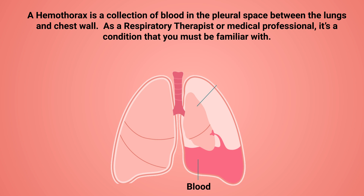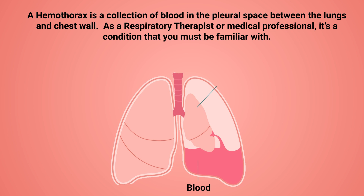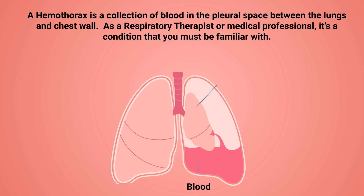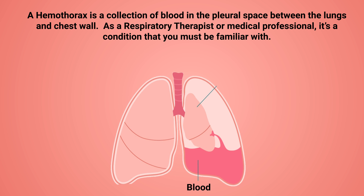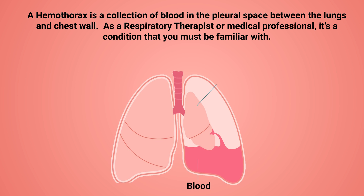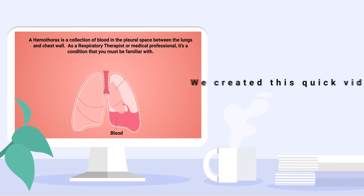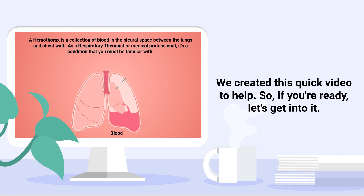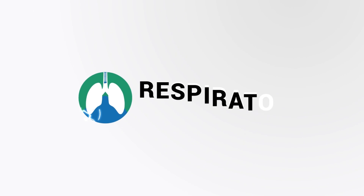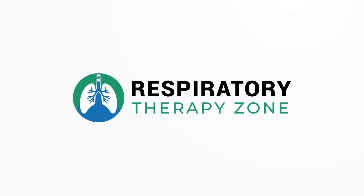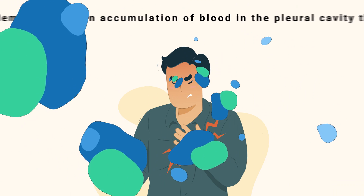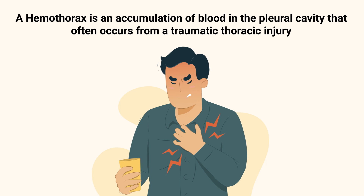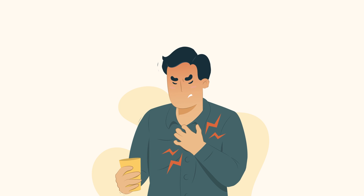A hemothorax is a collection of blood in the pleural space between the lungs and chest wall. As a respiratory therapist or medical professional, it's a condition that you must be familiar with. A hemothorax is an accumulation of blood in the pleural cavity that often occurs from a traumatic thoracic injury.